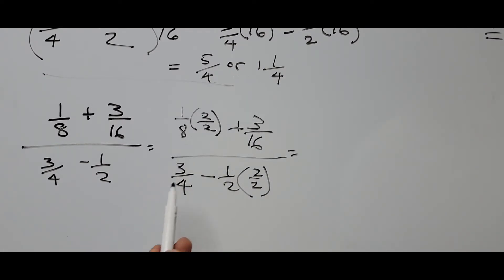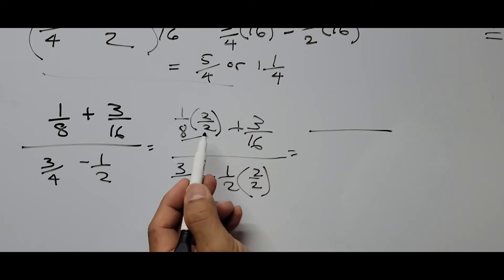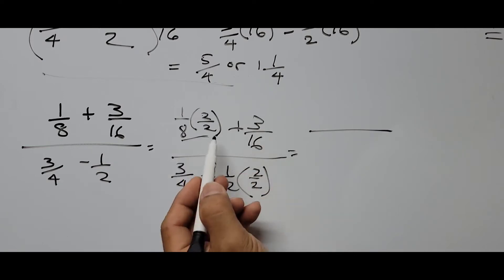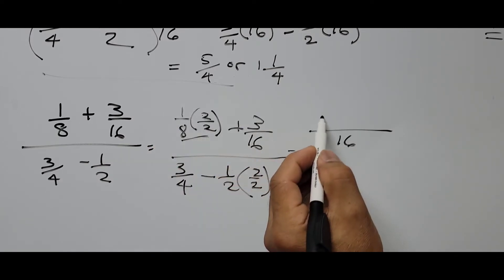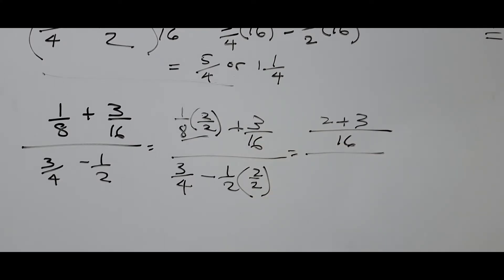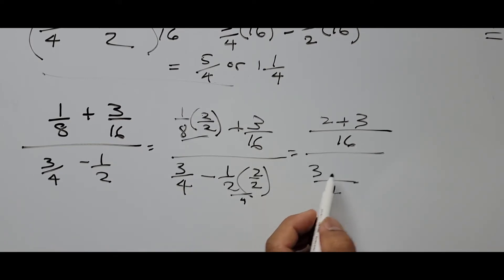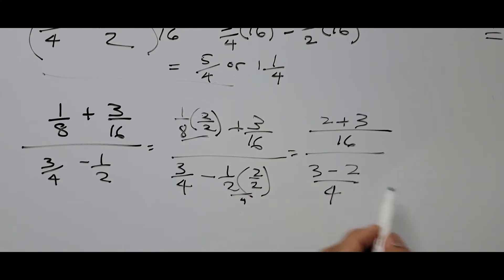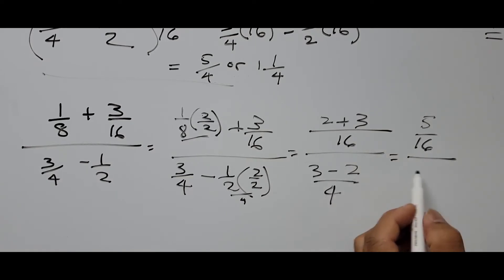Now simplify: since 8 times 2 is 16, the numerator combines into one denominator of 16. The numerator becomes 2 plus 3, giving 5/16. The denominator: 3/4 minus 2/4 equals 1/4. So we have 5/16 divided by 1/4. Change division to multiplication and invert: 1/4 becomes 4/1. So 5/16 times 4/1 equals 20/16. Reducing: divide by 4 gives 5/4, which equals 1 and 1/4. Same answer as before.